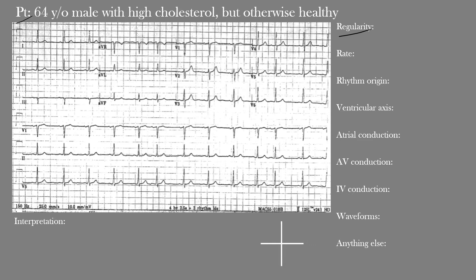I want you to pause the video and take a few minutes to go through it yourself. When you're ready, start the video and we'll go through it together. So our 64-year-old male with high cholesterol and no other significant medical history brings us his EKG. On first impression, the rhythm appears a little irregular in some areas but then regular in others, so we call this a regularly irregular rhythm.